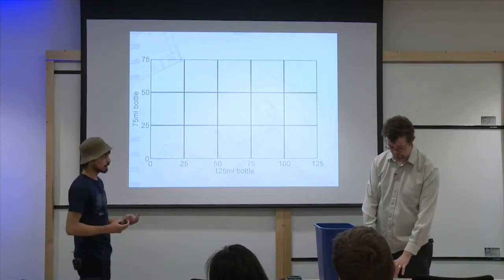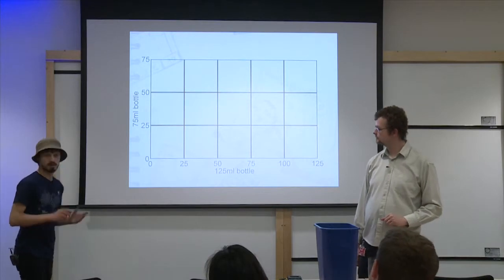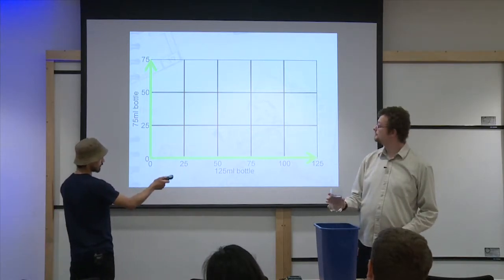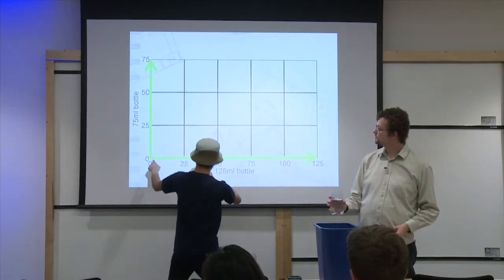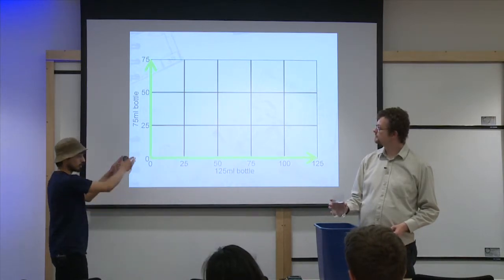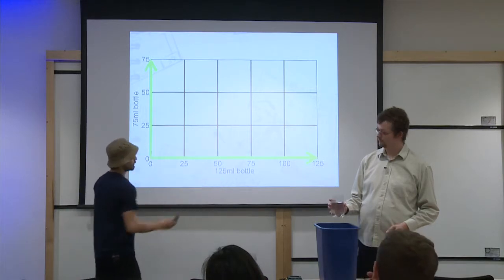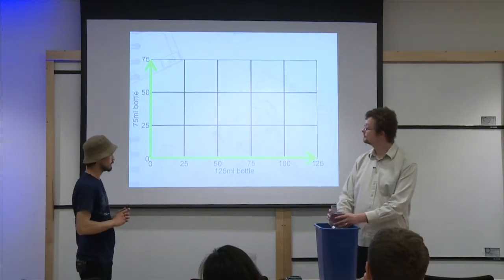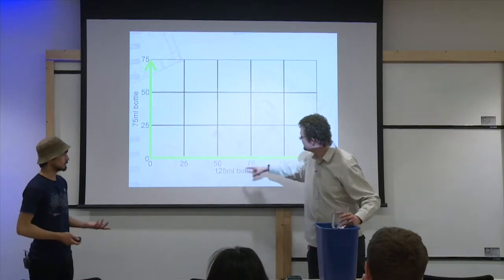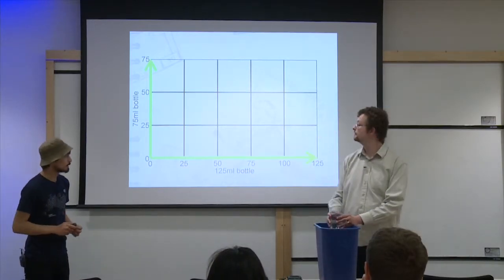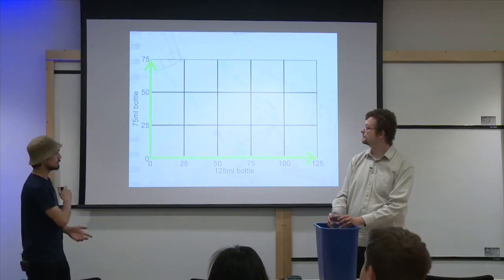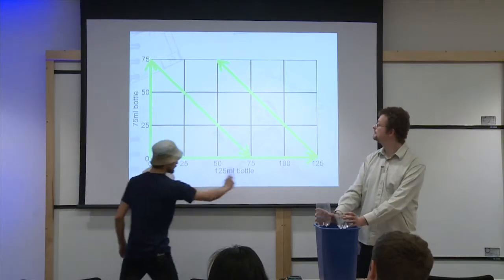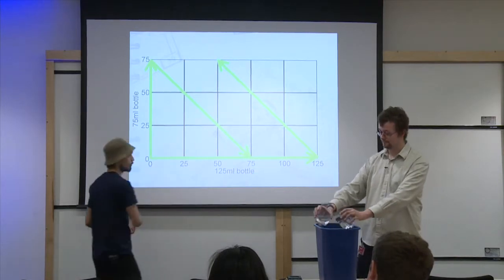So now we've got something to work with. Now what we need to do is identify what we can do. What moves are we allowed to make? Well, as I said before, we could fill either bottle. So filling the 125 milliliter bottle is going from here all the way to the other side. Or indeed from anywhere that you start with. But we're starting with zero. So fill takes you all the way to the end. And same with the 75 milliliter bottle. Filling that takes you all the way to the top. That's not all we can do. You can't fill to the 50. You can't fill to the 75. It always just takes you right to the end. But like I said, that's not all we can do. We can transfer. So we've got going all the way to the end. That's filling. Incidentally, we can do that in reverse and empty and go all the way back to zero.